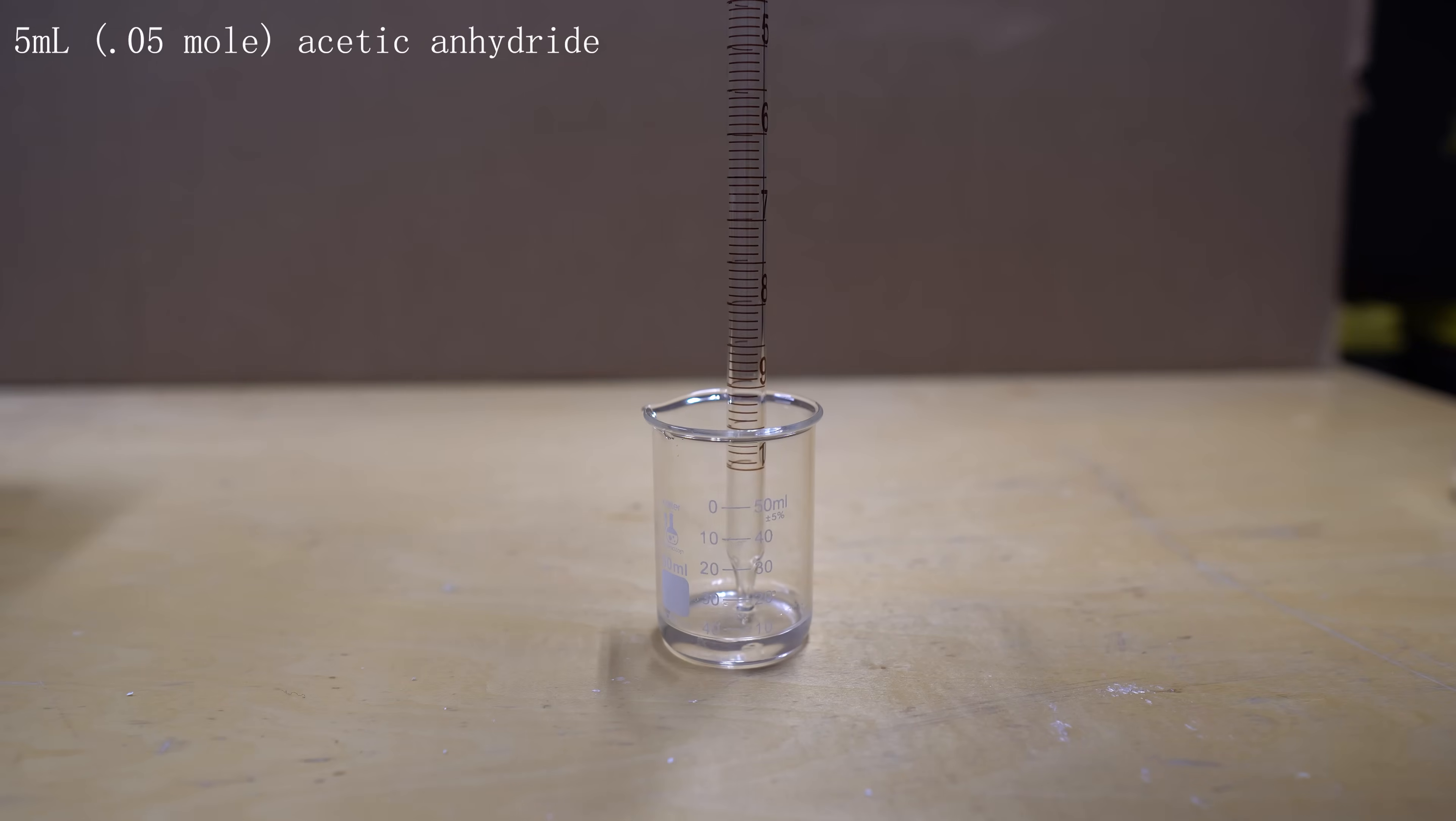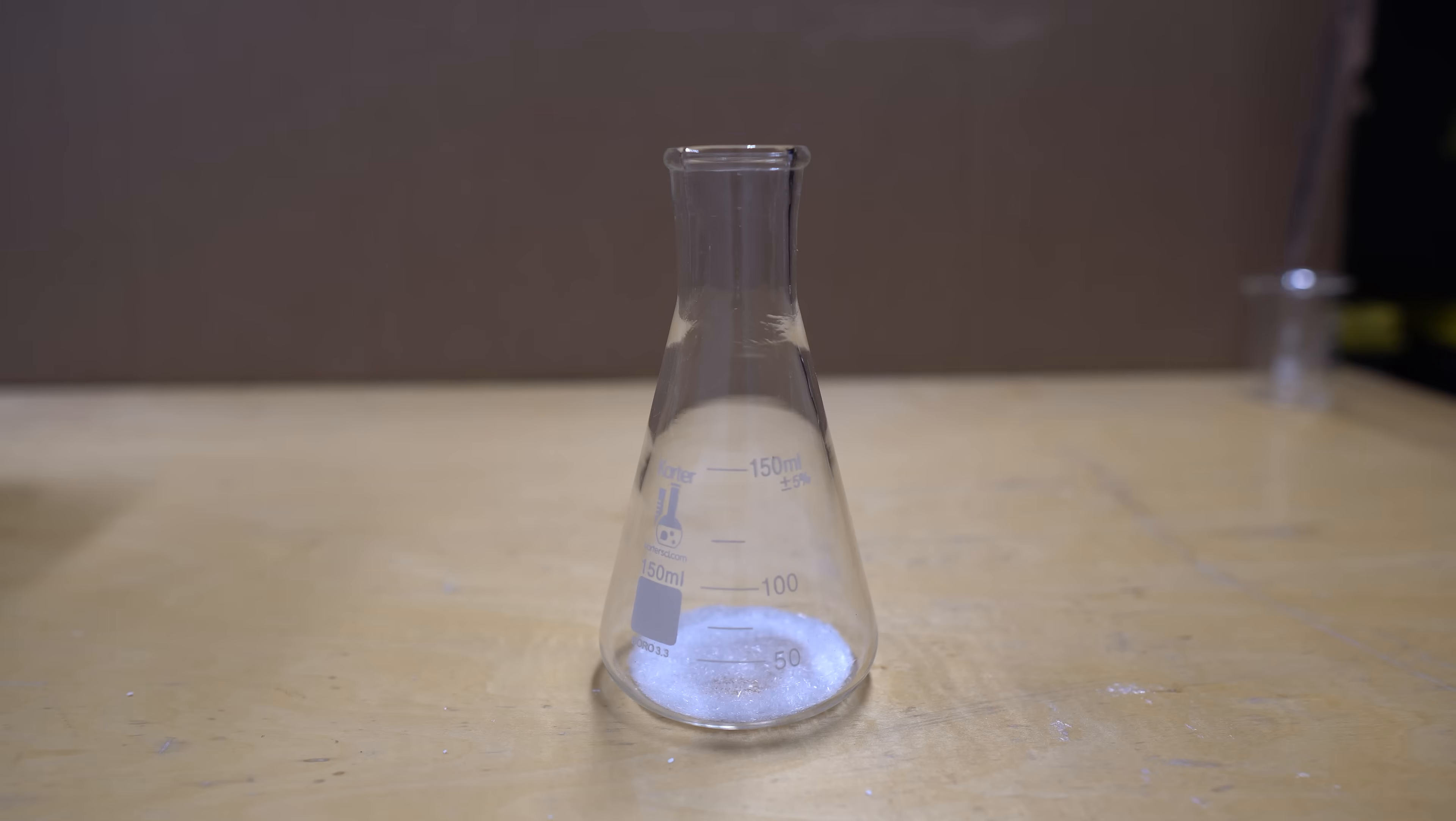5ml of acetic anhydride was measured out and then transferred into the flask with the salicylic acid. Fun fact, acetic anhydride is used in meth synthesis, but we won't be making that today. Also, do not breathe this stuff in. It should be carried out in a fume hood or a well-ventilated area. It can cause damage to your lungs.